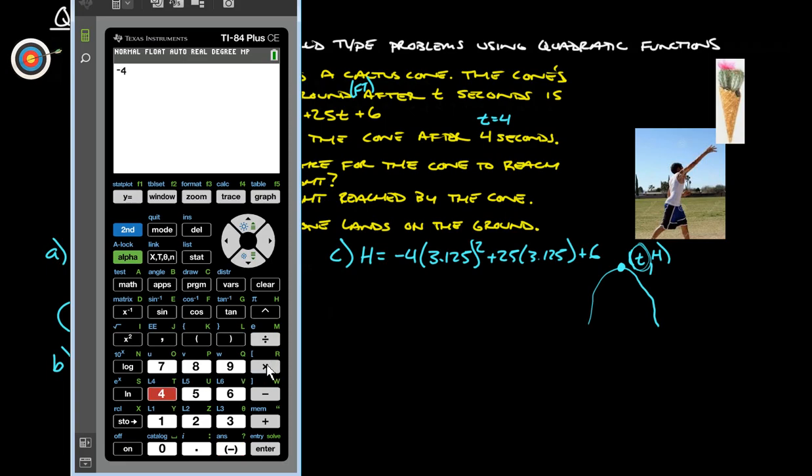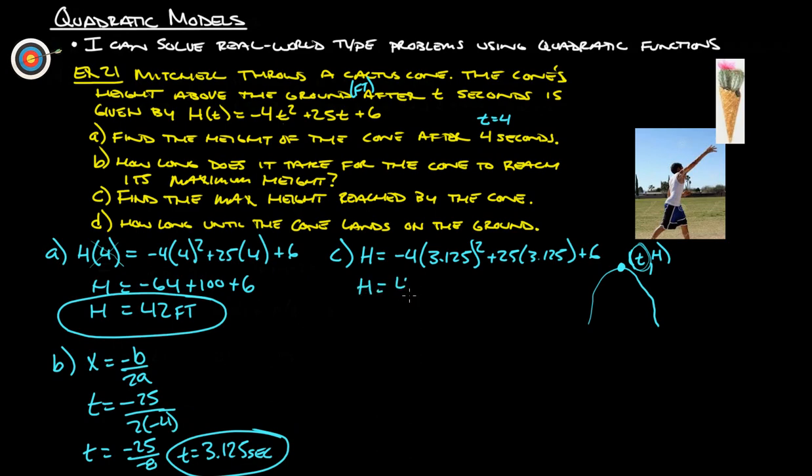So negative 4 times 3.125 squared plus, make sure that when you push the plus that it goes back down, because some of your graphing calculators will just start adding the plus in the exponent here, and we don't want that, so plus 25 times 3.125 plus 6, and we get 40.0625, so the height equals about 40 feet. That's a pretty good chuck for a cactus cone.